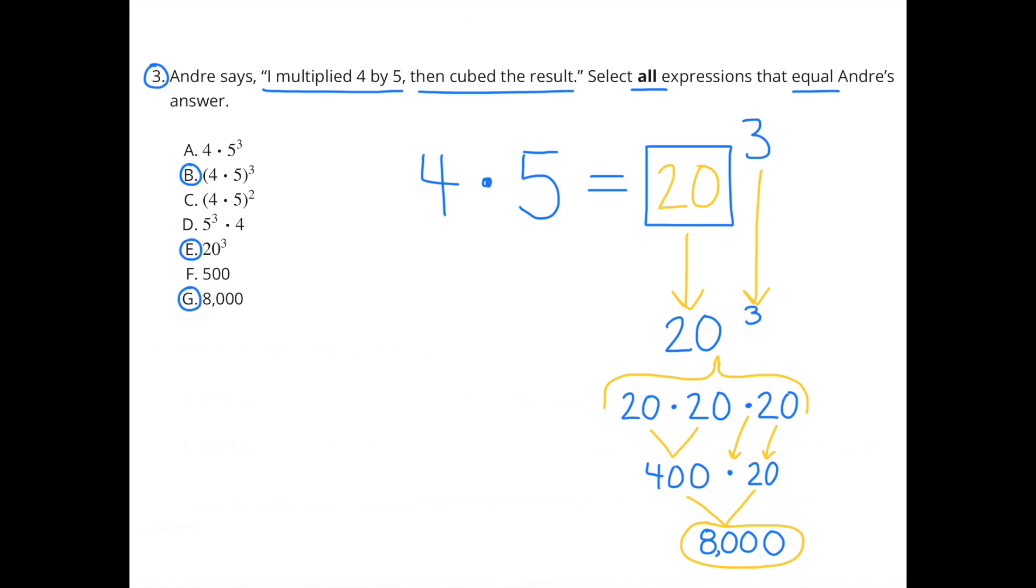Height, width, and length. 4 times 5 equals the result. The result is 20. Then he cubed the result. So that means 20 to the third power, or 20 times 20 times 20, which is the same as 400 times 20, or 8,000.